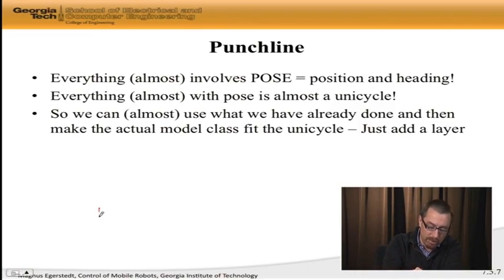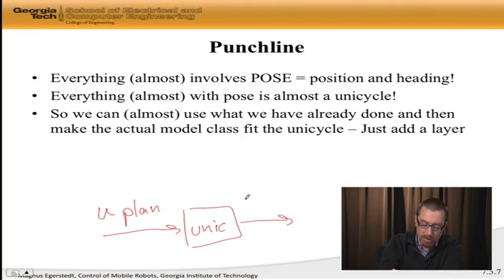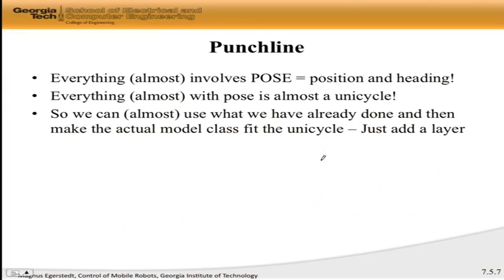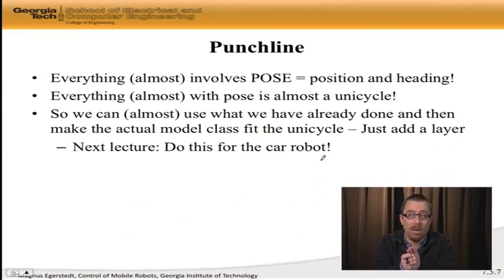The punchline then becomes that we can almost use everything that we've already done, and then possibly add another layer to what's going on. So, what you have is your u planned that comes into your unicycle. And out of that comes our old friends, V and Omega. And then, whatever actual robot you have, it's going to move like this. And the point is that in here, we may be forced to somehow make the actual robot look like a unicycle a little bit. But it's just another layer to our already elegant and well layered architecture. And in fact, next time what I want to do is exactly this for the car robot. To see, how do you make a car act like a unicycle? This is something I had to do when I was dealing with autonomous self-driving cars.